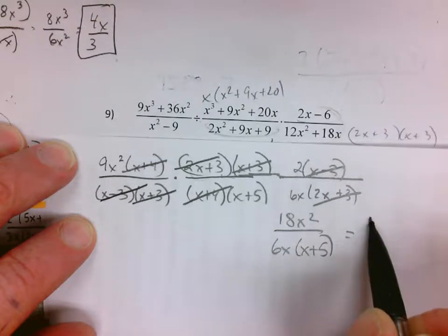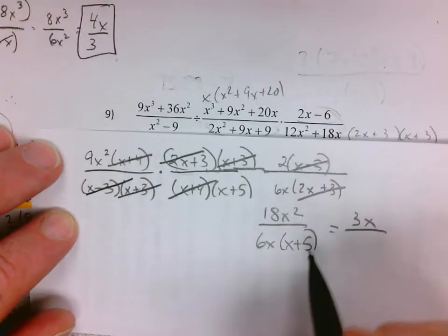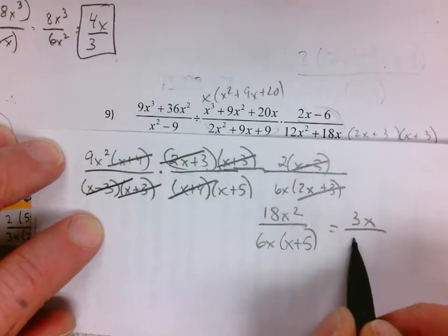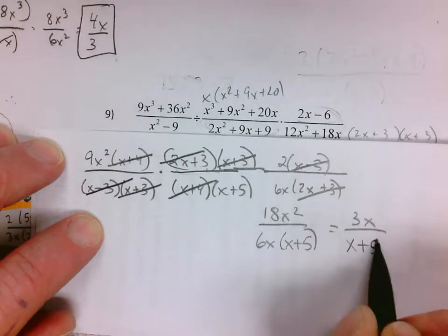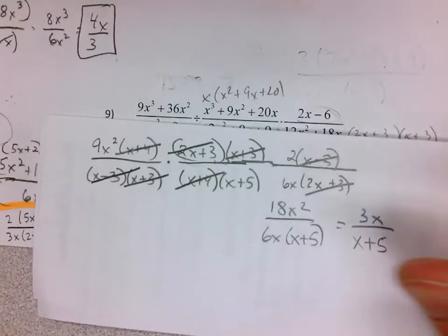which is 3x over x plus 5. So there it is, all the way reduced. While we're finishing this up, I didn't get to go through number seven. This is making a video, I might as well do it.